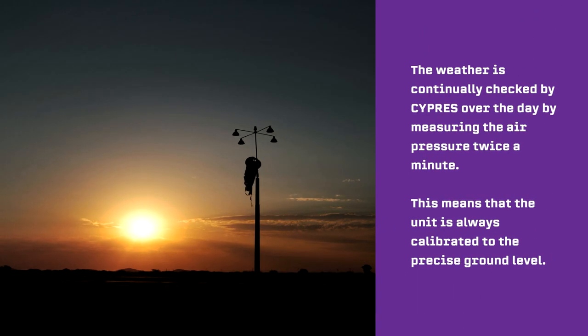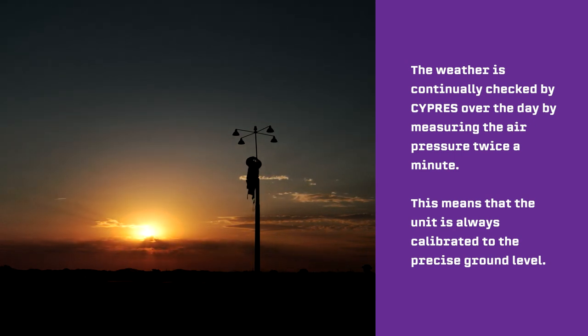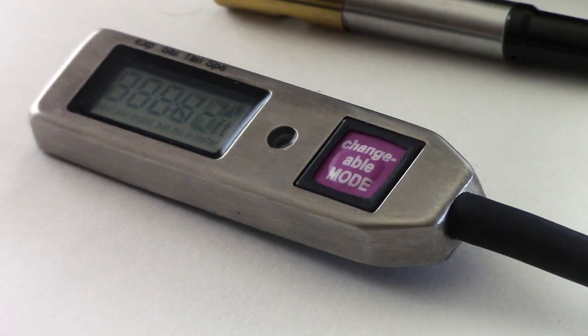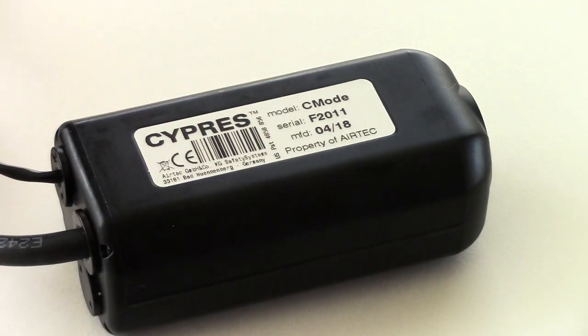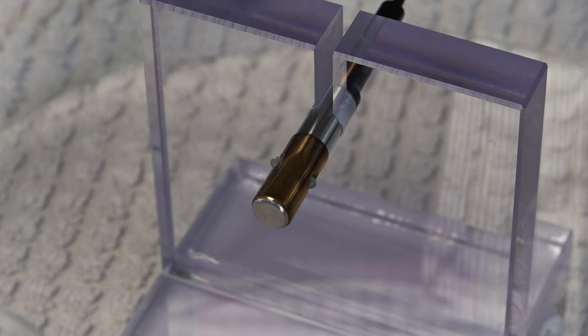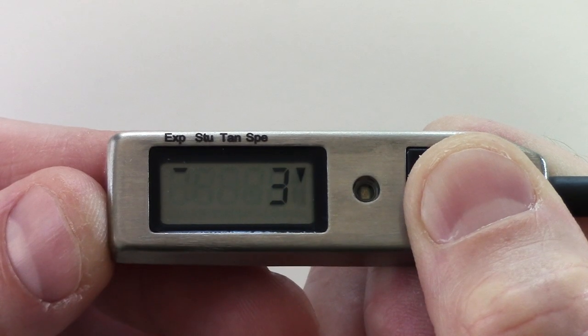It is not necessary to switch the unit off because Cypress will do this itself. The weather is continually checked by Cypress over the day by measuring the air pressure twice a minute, meaning the unit is always calibrated to the precise ground level. A Cypress consists of a control unit, a processing unit, and one release unit, also known as a cutter. Every time a Cypress is switched on, it measures the air pressure several times in a short period of time and takes the average value as the value for ground level, thus zeroing itself.